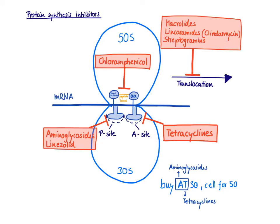The tRNA either binds to the P site or the A site. The P site is only bound once in this process of translation, which is during initiation. The tRNA binding to the P site carries the initiating amino acid, which is formyl-methionine in bacteria and methionine in eukaryotic cells. That formyl-methionine is encoded by an AUG codon, exactly as it is in humans.